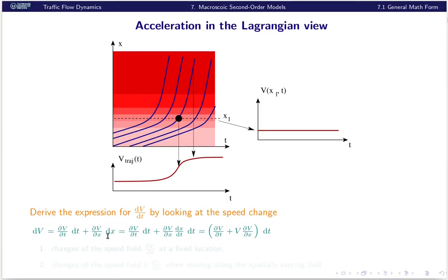This term represents the speed change due to spatial speed gradients — that is the speed gradient times the displacement. We want to replace dx by dt, so we extend dv/dx by dv/dx times dx/dt times dt. And dx/dt is of course the local speed. In summary, we have dv equal to this substantive derivative, also called the convective derivative, times dt. That means the total derivative dv/dt gives this acceleration — the acceleration in the moving frame of reference. In particular, this term does not indicate any true acceleration; it's just because we move to other regions, so even without own acceleration, this term would be present.